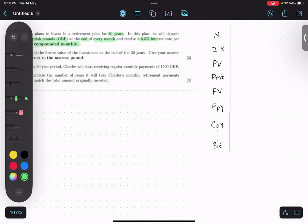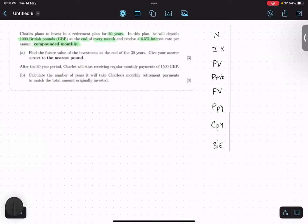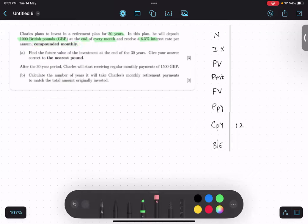We will start filling the details. Since compounding is happening monthly, CPY will be 12, because there are 12 months and compounding is happening monthly. Interest rate is 6.5%, so let us fill that. And there is one more word given: end, so we will put that over here.